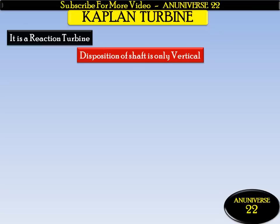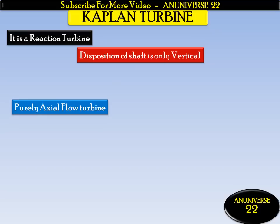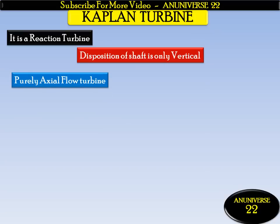The shaft of an axial flow reaction turbine is vertical, so the disposition of the shaft is only vertical here. It is a purely axial flow turbine — if water flows parallel to the axis of rotation of the shaft, the turbine is known as an axial flow turbine.